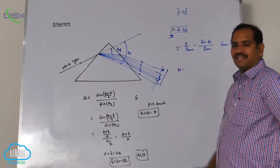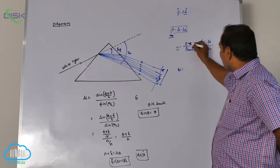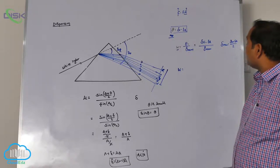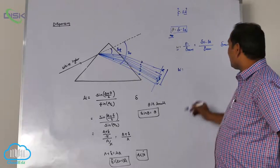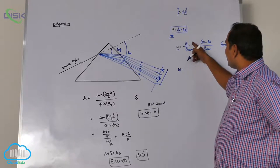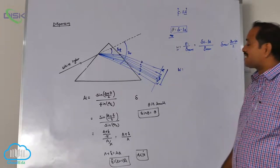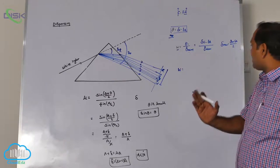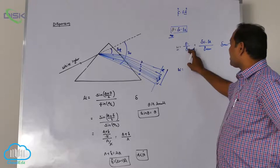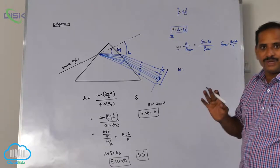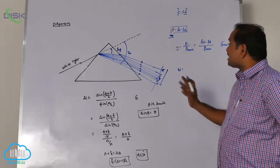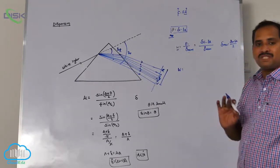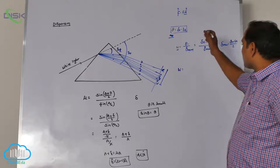Dispersive power is the ratio of angular dispersion to mean deviation. From this you can understand clearly that dispersive power has no units because it is a ratio — whereas optical power has units of diopters, but dispersive power has no units.